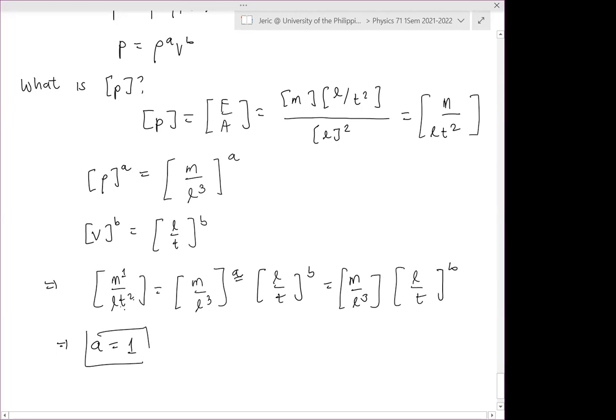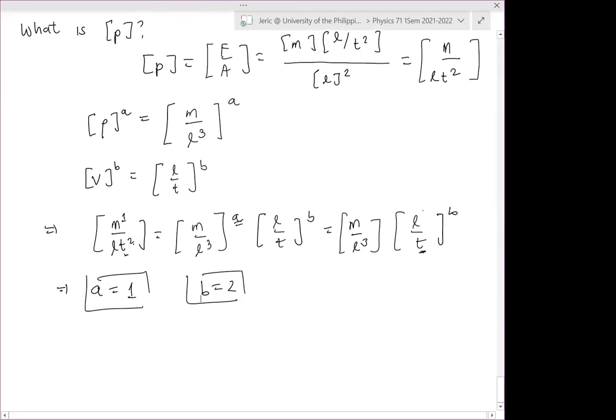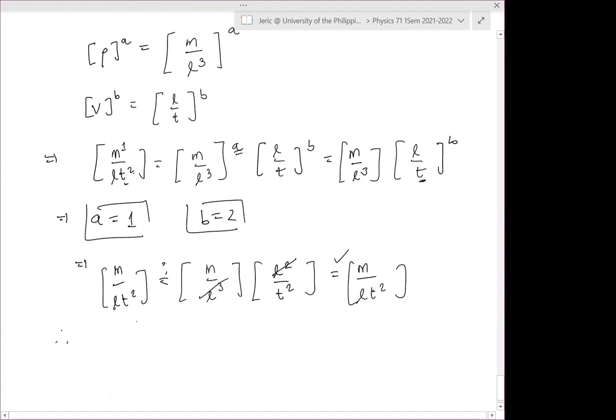This means that by comparison, A should also be equal to 1. So this means that we have M over L cubed, and then L over T raised to B. Now let's look at T squared. T has power of 2. And here, there's only one T. Therefore, what can we say about B? B equals 2. And let's check if it's correct. So if I do that, we have M over L T squared. Because this equals M over L cubed multiplied by L squared over T squared. But this will cancel out. And we have M over L T squared. Therefore, it's now dimensionally consistent.